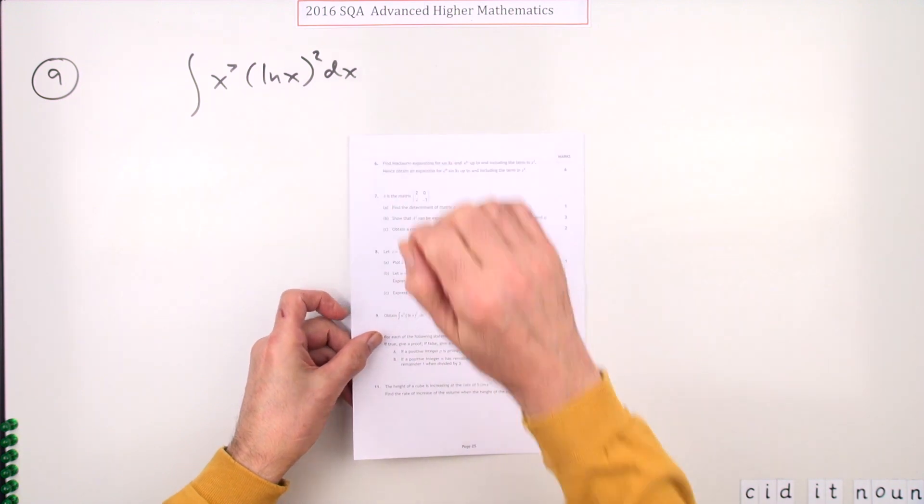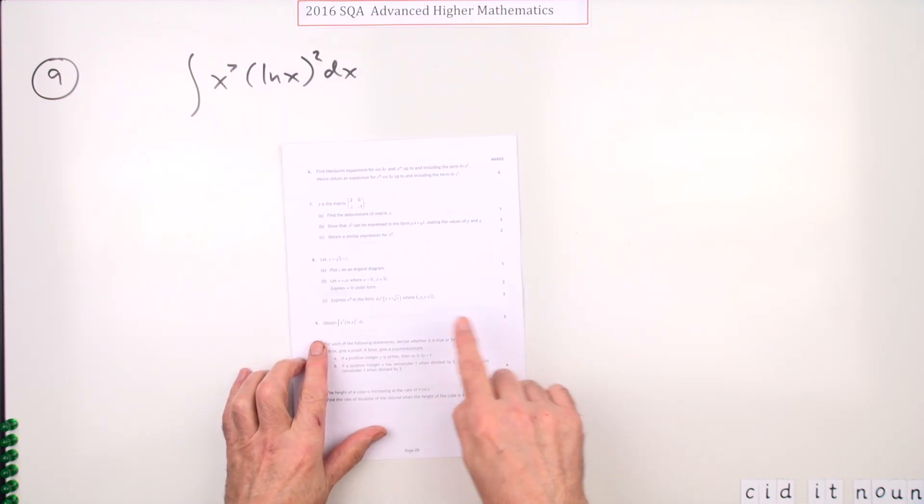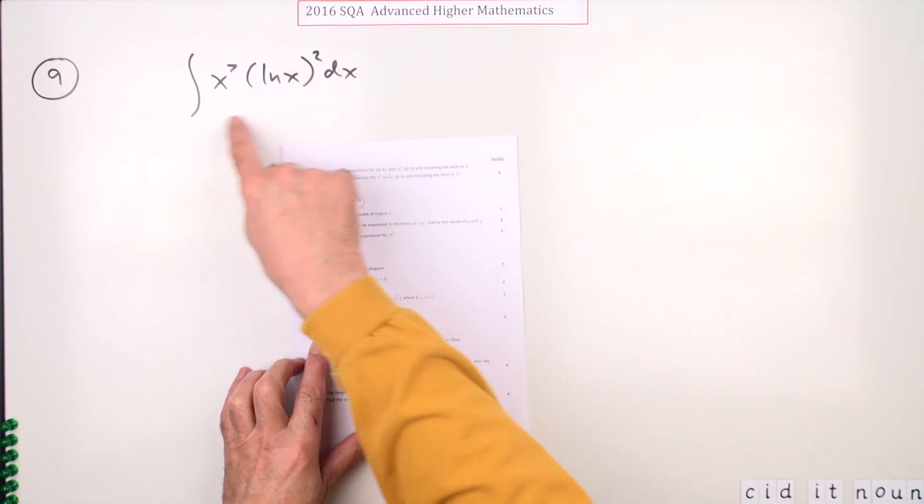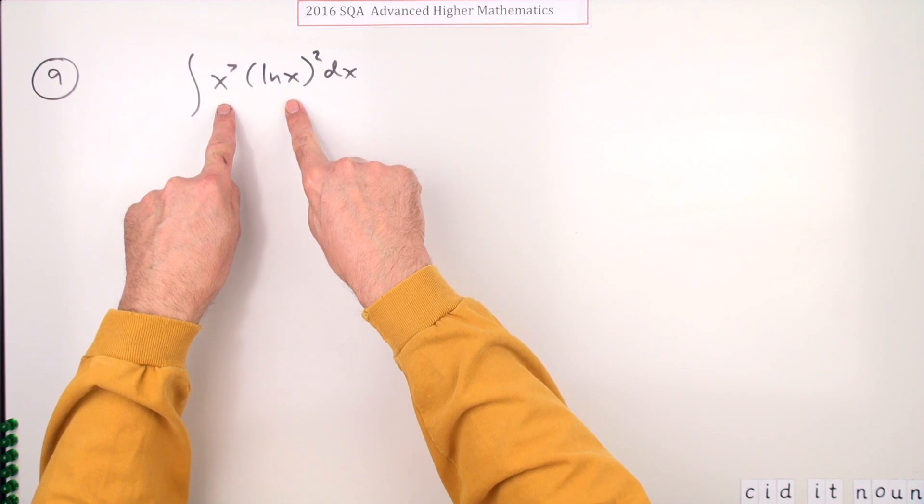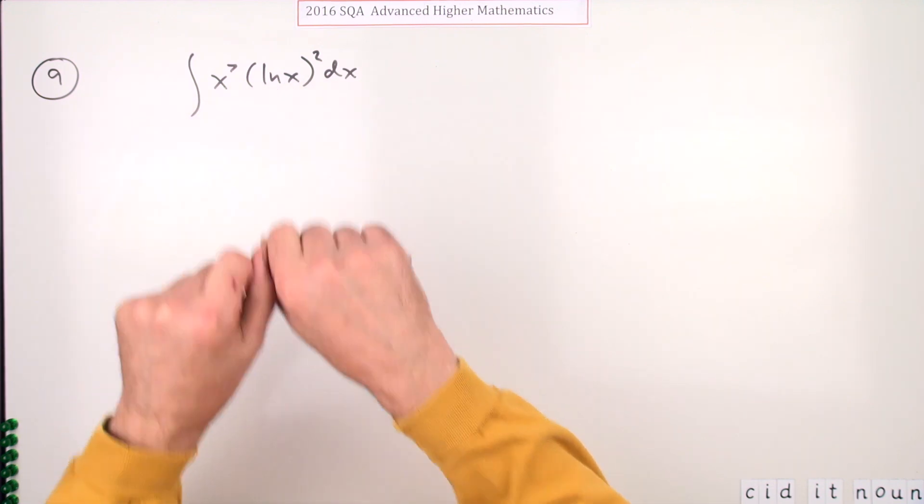So number nine from the 2016 Advanced Higher Maths, here we go. Six mark question: obtain this integral here for six marks. Now obviously it's going to be integration by parts as soon as you see that product there.